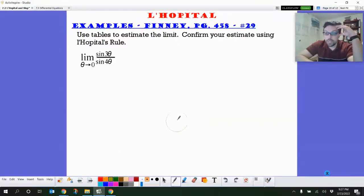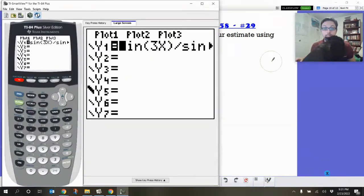In this example, we want to use tables to estimate the limit. And you know what we've got? We've got that calculator. So let's take a look at the calculator. I typed it into my calculator. I got sine of 3x over sine of 4x.